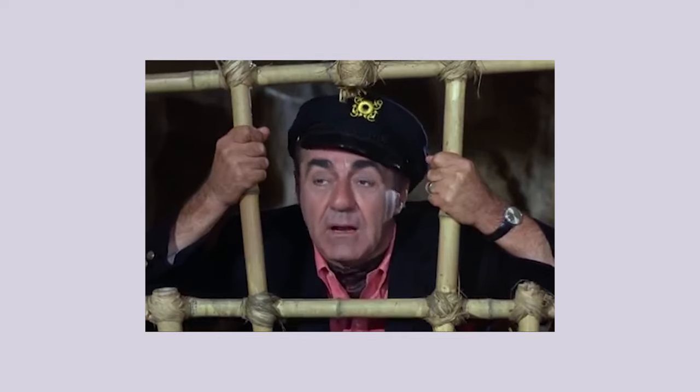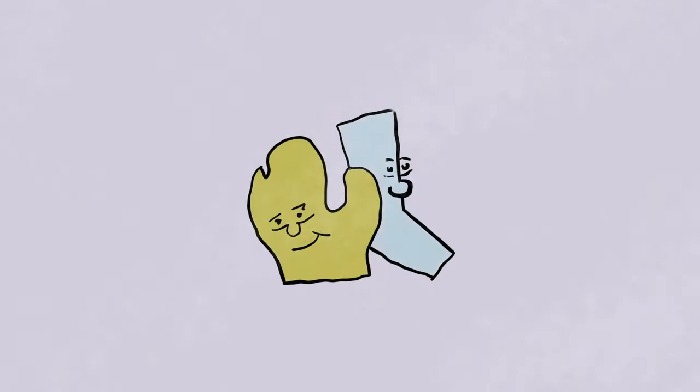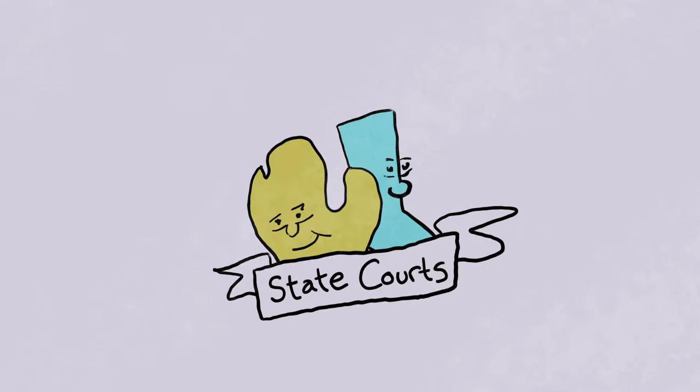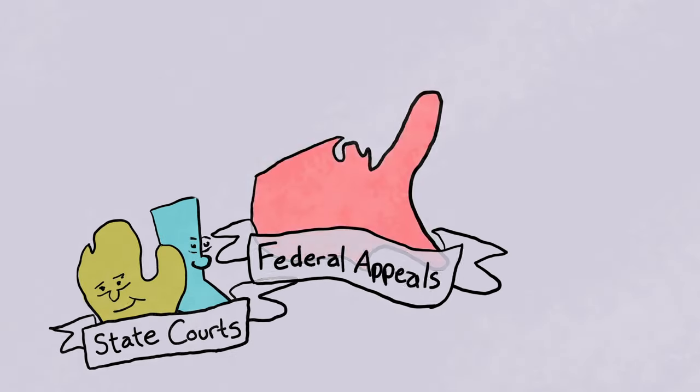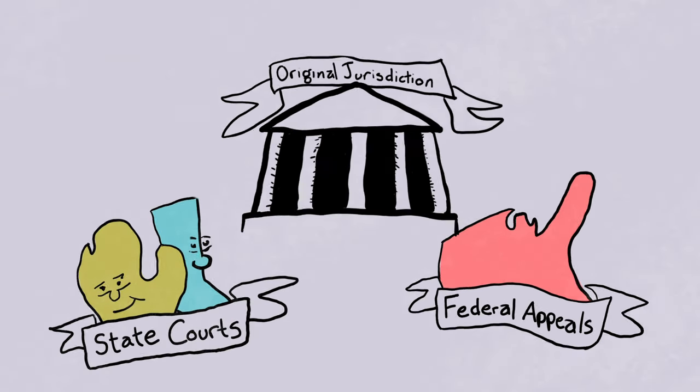So how does a case get to the Supreme Court? Despite what you may see on TV or in the movies, you can't just take it to the Supreme Court. The Supreme Court will only hear a very small fraction of cases involving a very small fraction of disputes. The Supreme Court only hears three types of suits: appeals from state courts where there's a constitutional question at stake, appeals from federal courts, or cases where the Supreme Court has what's called original jurisdiction.